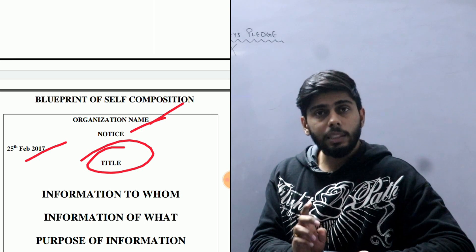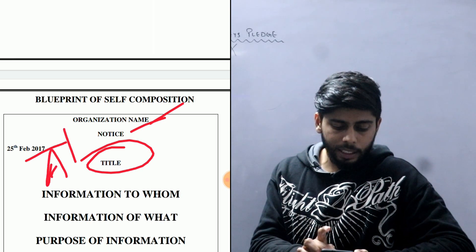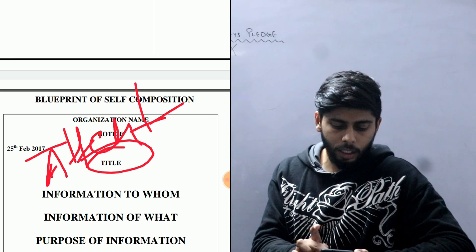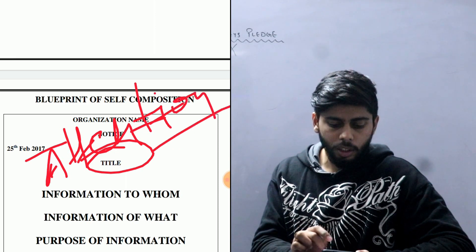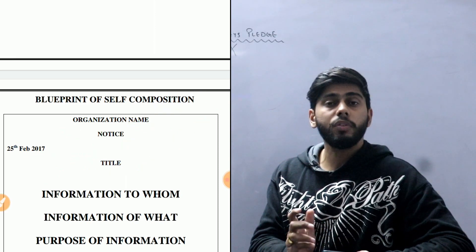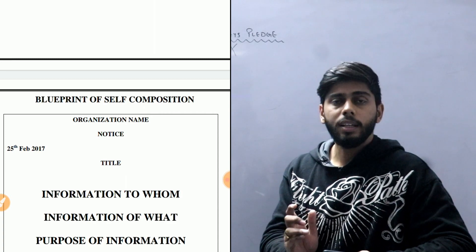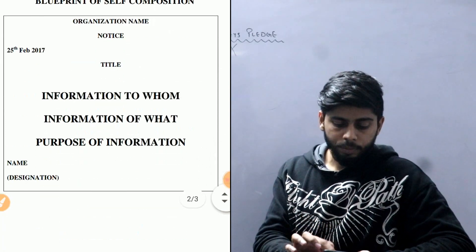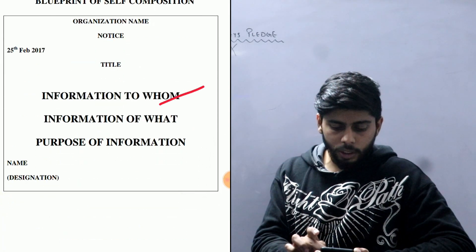If we have a casual notice, then our title is 'Attention.' If we have an event notice, the title is the name of the event itself. Let's keep the sample format in view. The first thing is what information we need to include — how we inform students, which students, and where we mention that.